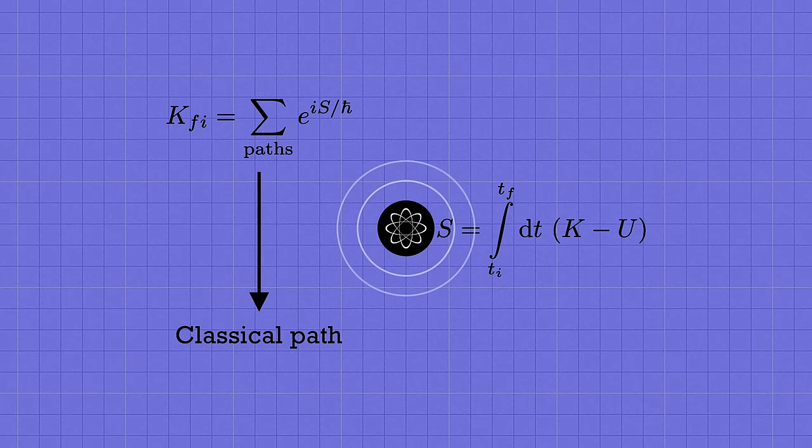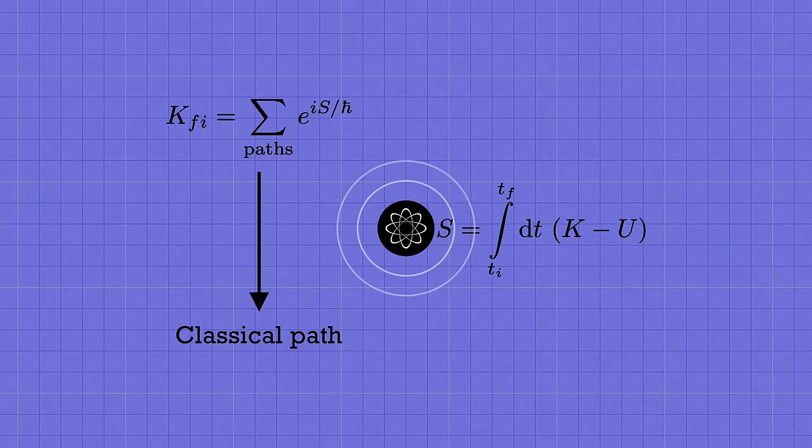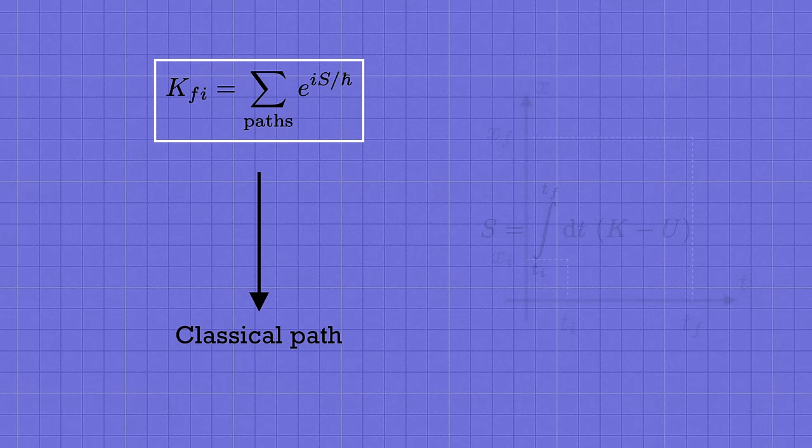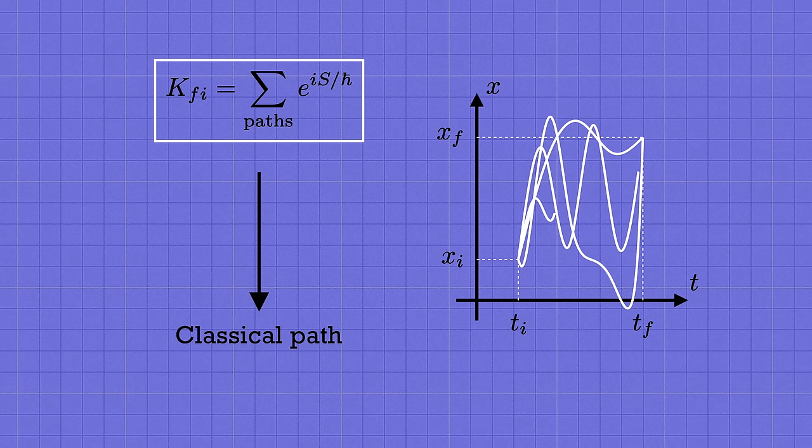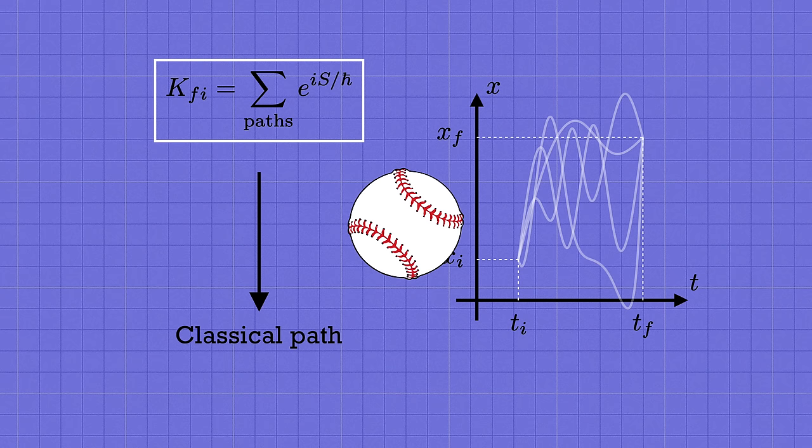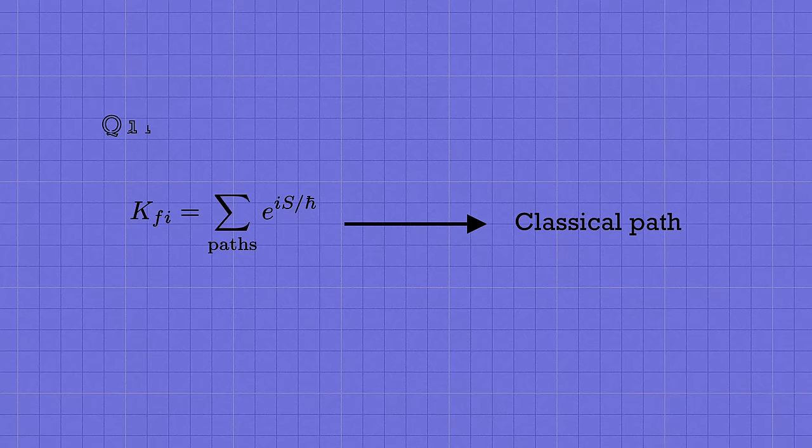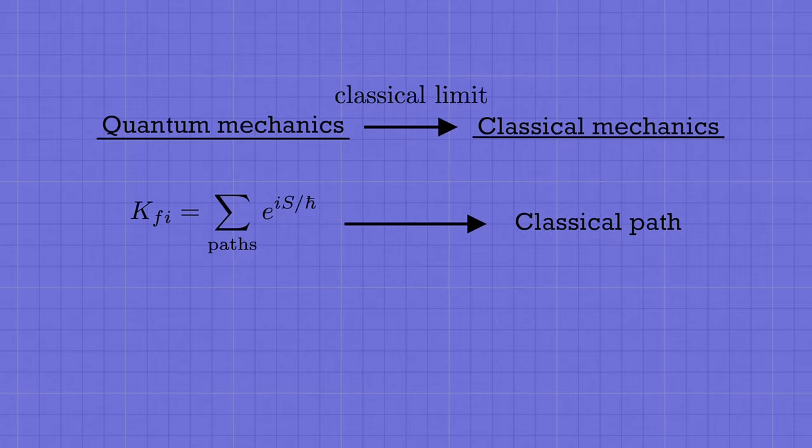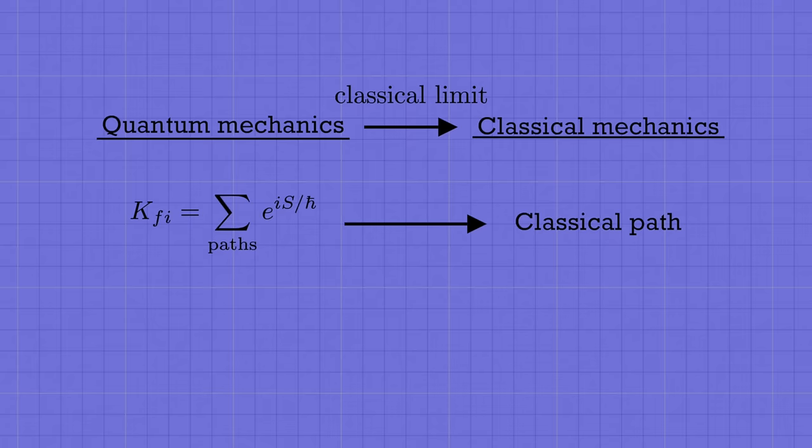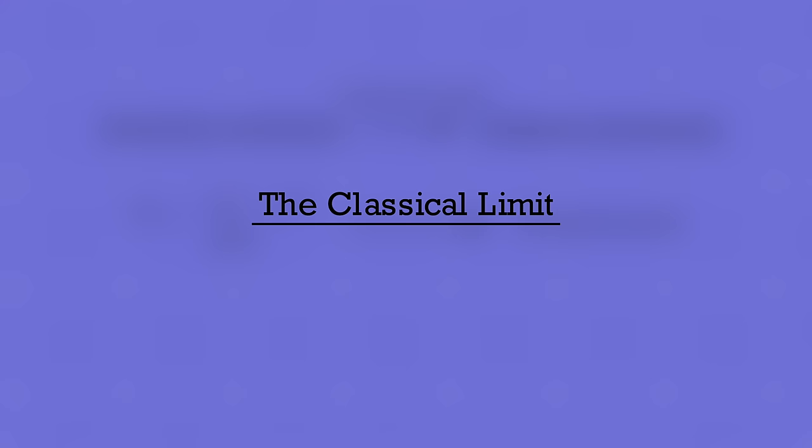And we'll see why, after we've talked about the second key piece of motivation for where this weight e to the is over h-bar comes from. It ensures that the unique classical trajectory emerges when we zoom out from studying tiny quantum mechanical particles to bigger everyday objects. It's not at all obvious how that works at first glance at Feynman's formula. If this is telling us to sum over all paths that the particle could follow, each with the same magnitude and just different phases, how could that possibly be consistent with what we observe in our daily lives, where a baseball most definitely follows a single parabolic trajectory?